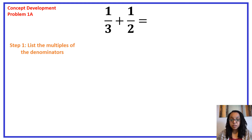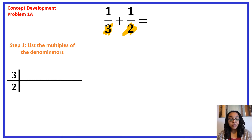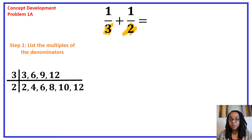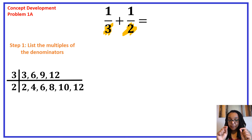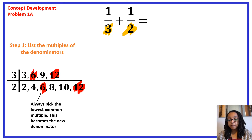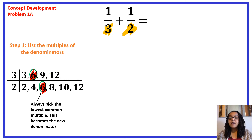To find a common denominator, list some of the multiples of the denominators 3 and 2. Skip counting by 3s: 3, 6, 9, 12. Multiples of 2: 2, 4, 6, 8, 10, 12. The next step is to find a common multiple shared by both 3 and 2. I notice that 6 is common, and 12 is also common. You always pick the lowest common multiple, so you would pick 6, not 12. That 6 now becomes our new common denominator for both 1 third and 1 half.